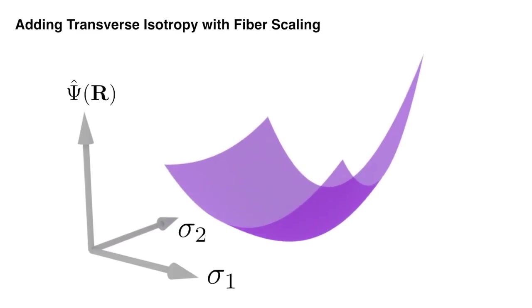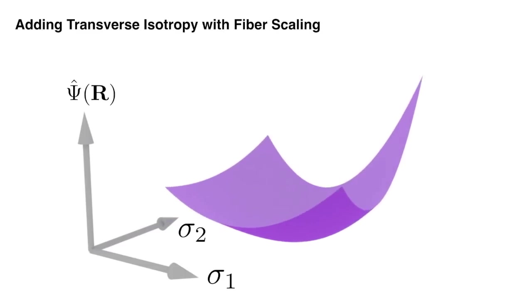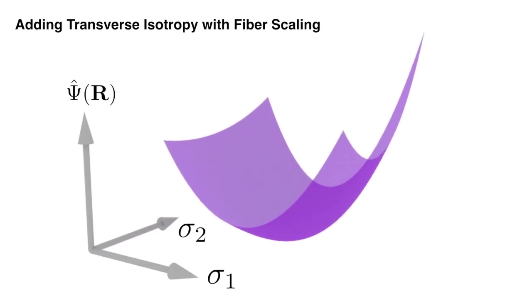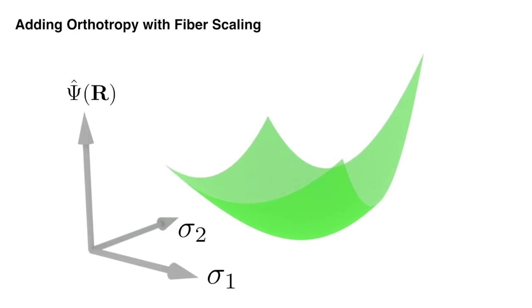Next, we scale only the primary fiber direction to model a transversely isotropic material. Notice the asymmetric scaling on the surface. Finally, we scale both the primary and secondary fiber directions to model an orthotropic material. Notice the symmetry of the surface scaling.